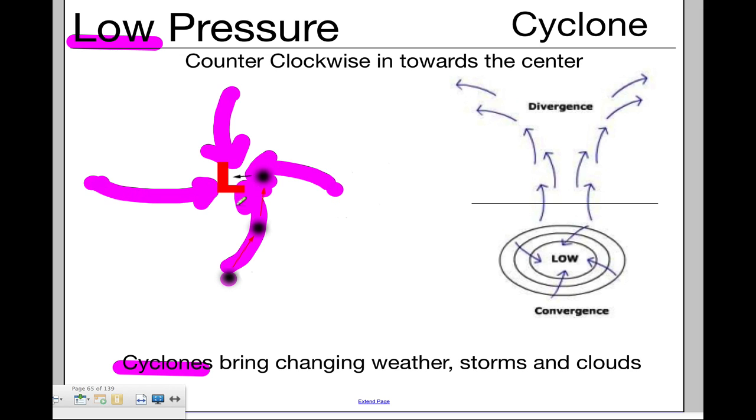So the low drags air in together, because that air gets pulled along the surface and then floats upward, higher into the atmosphere. So when you see a low, you're going to think about changing weather, and there will be storms and clouds.